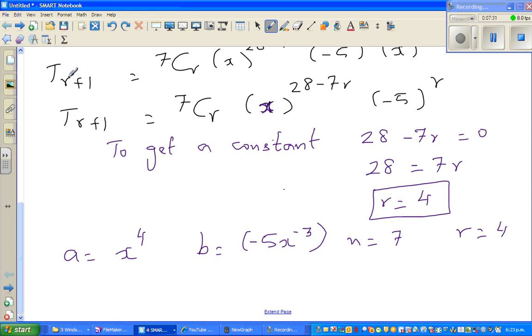So let us put this in this form. So this is T_4+1, is equal to 7C4. 7C4 times x to the power, if you put 4 here, 28 minus 28 is 0, times minus 5 to the power 4.